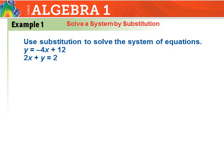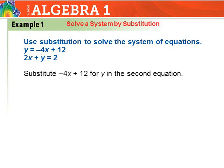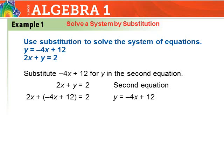The first equation is already solved for y, so I can substitute negative 4x plus 12 in place of y in the second equation. It becomes: 2x plus, instead of y, we write negative 4x plus 12, equals 2.